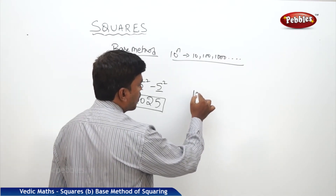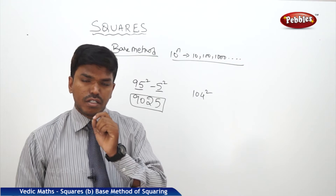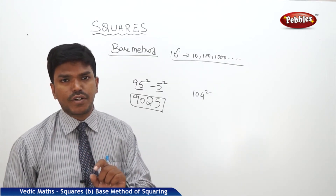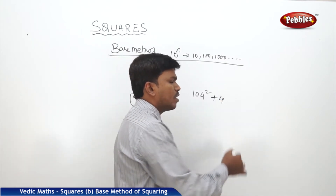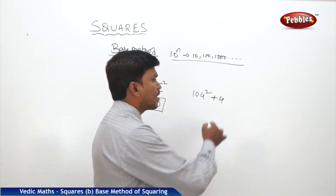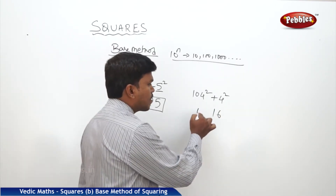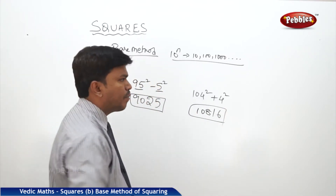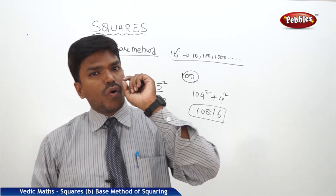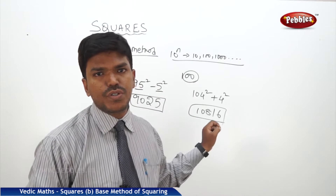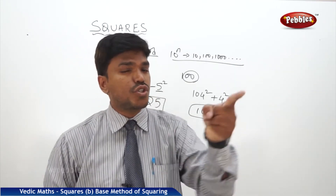One more example. I need 104 square. 104 is nearer to 100, so take the base as 100. Compare 104 with 100 — it is more by 4, so write plus 4. What is 4 square? 16 — write 16 on the right side. And 104 plus 4 is 108. Remember, the base is 100, which has 2 zeros, so the right side part of the answer should consist of only 2 digits. If the base were 1000, the right side should be exactly 3 digits.